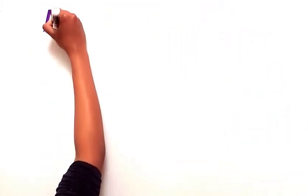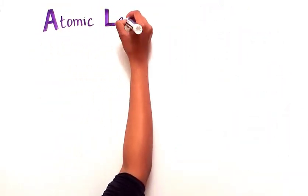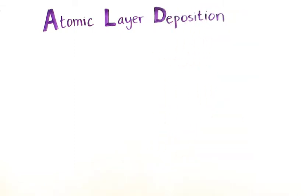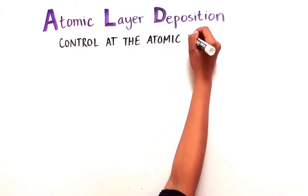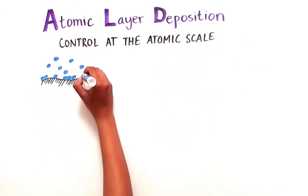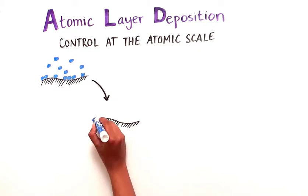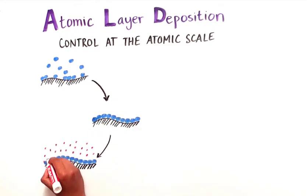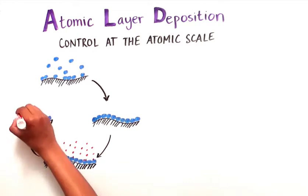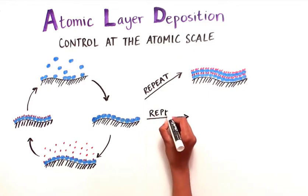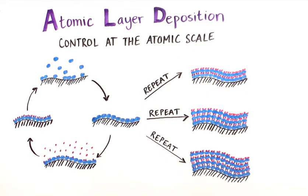To achieve this level of precision, the Bend Group makes devices with a technique called atomic layer deposition, or ALD, which enables control at the atomic scale. ALD allows scientists to deposit a single atomic layer of a chosen material onto any given surface. The material is deposited in a multi-step, self-limiting process, which can be repeated over and over again to build up the material one atomic layer at a time.